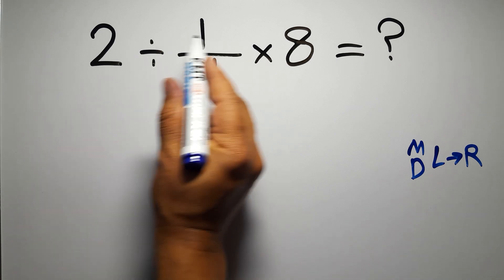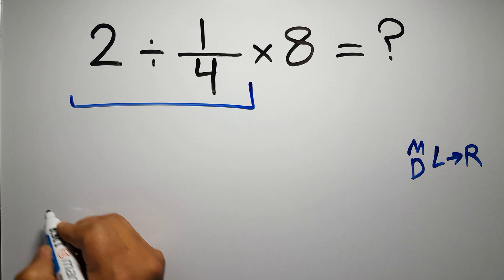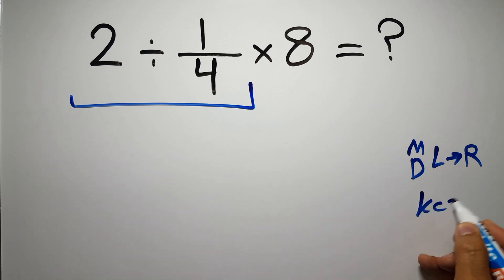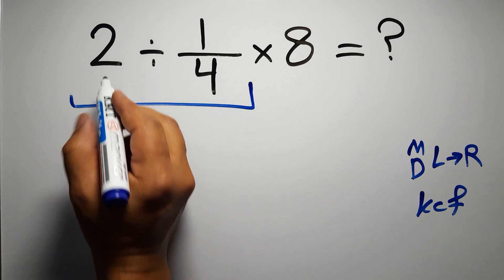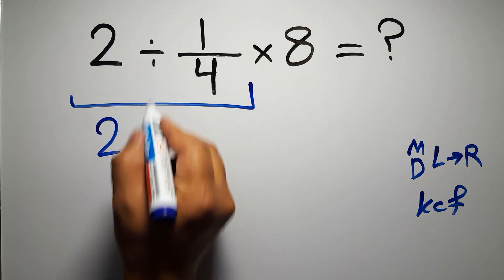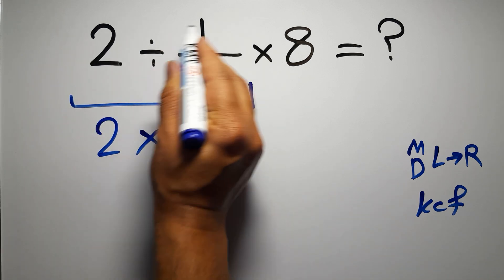So first this division: 2 divided by 1 over 4. According to the KCF rule, K stands for keep, C stands for change, and F stands for flip. We can write: keep the first fraction, change division to multiplication, and flip the second fraction.